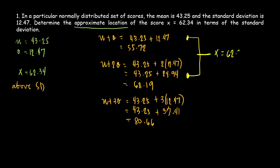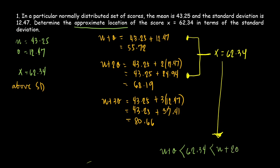The score 62.34 is located in the middle. For the conclusion, we write: mean plus standard deviation is less than 62.34, but 62.34 is less than mean plus 2 standard deviations. This is our final answer.